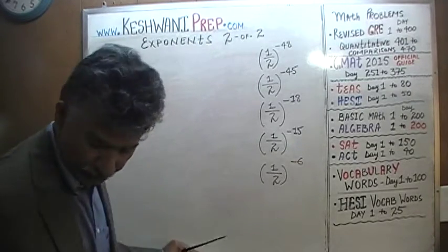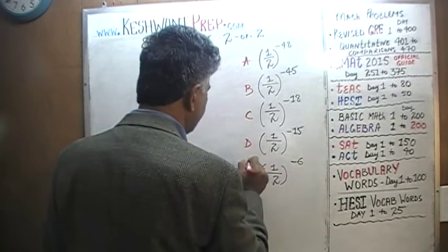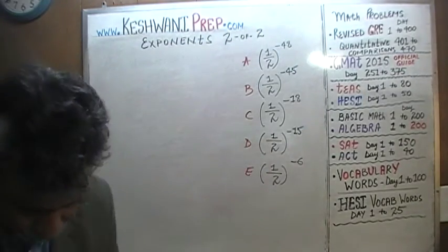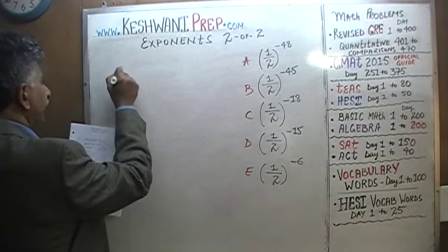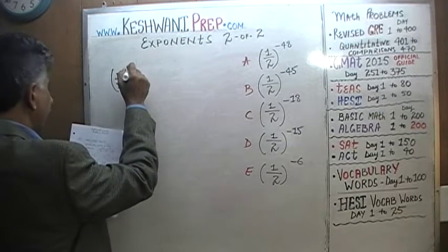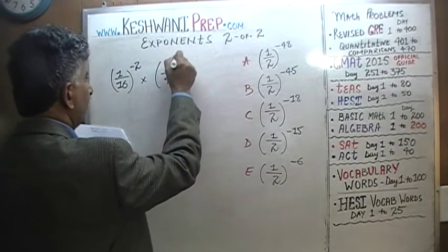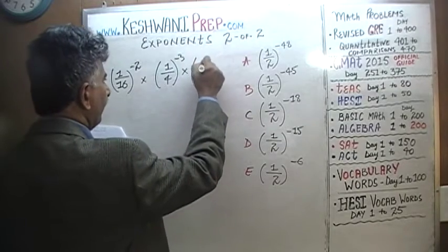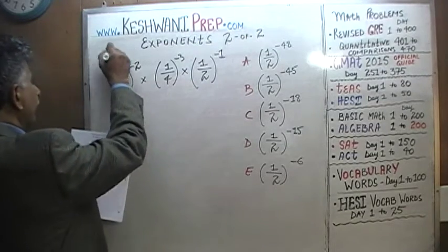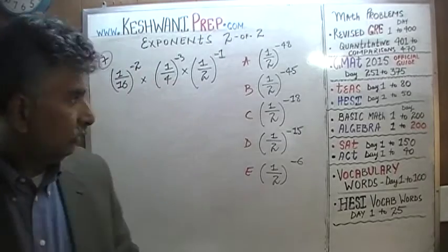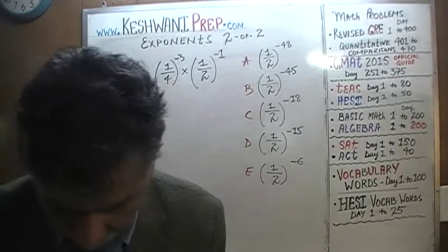I already have the answer choices on the blackboard — these are the five answer choices: A, B, C, D, and E. Let's see what question number 7 is asking. We have (1/16) raised to negative 2, times (1/4) raised to negative 3, times (1/2) raised to negative 1. If you work this out, it will equal which of these five quantities? As you can see, they are all expressed at the base of 1/2.